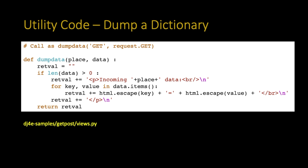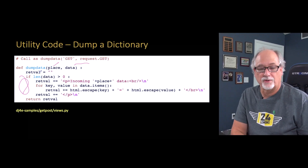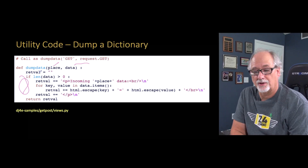Let's take a look at some code. This is a little utility function I'm going to use over and over again because the GET data, the POST data, and even the cookie data come in as dictionaries — key-value pairs. So I wanted a way to dump the data: take a label and a dictionary, go through all the items, call HTML escape so we don't end up with cross-site scripting injection, and print the keys and values with paragraph tags. That's what dump_data does.